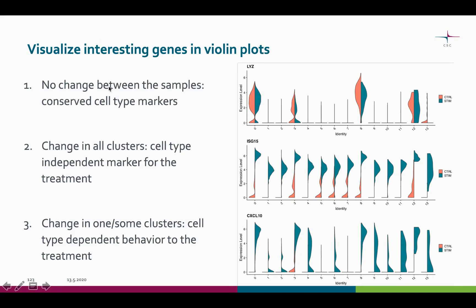Conserved markers show somewhat similar expression in both samples. This gene here is affected by the treatment regardless of the cell type, so we see a strong difference between the samples. In the last plot, we can see that some clusters or cell types are reacting to the treatment and others are not.